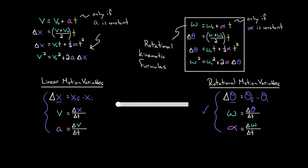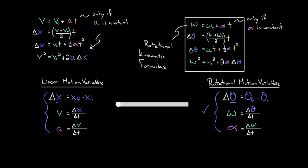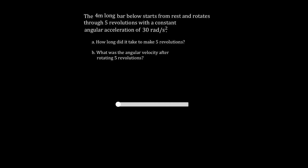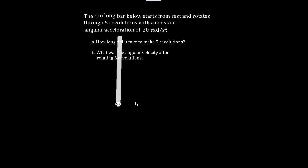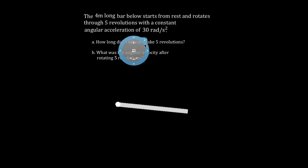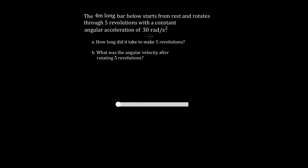Let's tackle a couple of examples using these rotational kinematic formulas. A four-meter-long bar starts from rest and rotates through five revolutions with a constant angular acceleration of 30 radians per second squared. The question is: how long did it take for this bar to make the five revolutions?